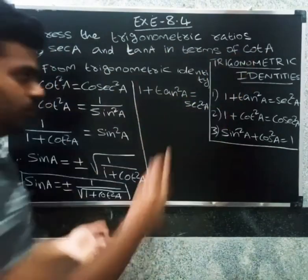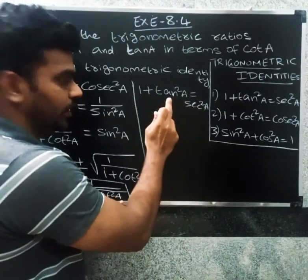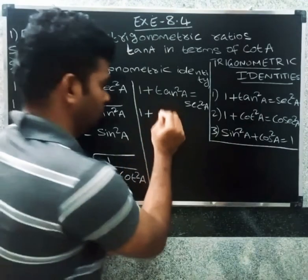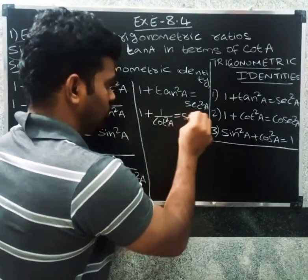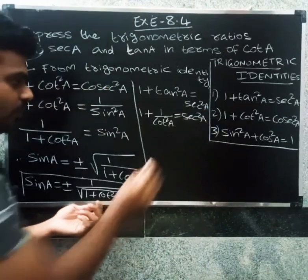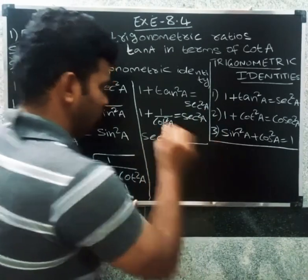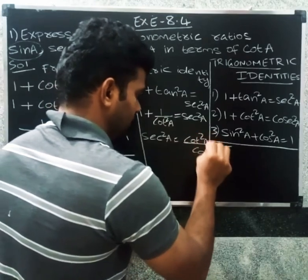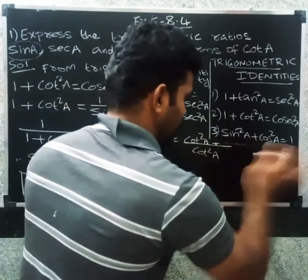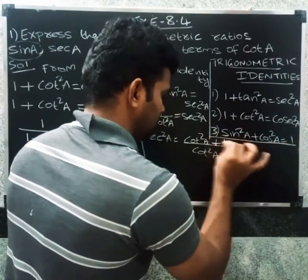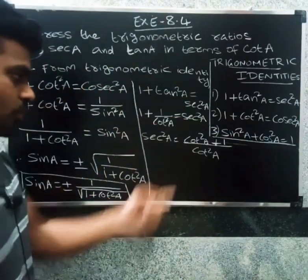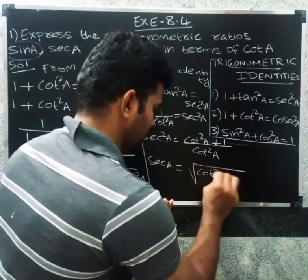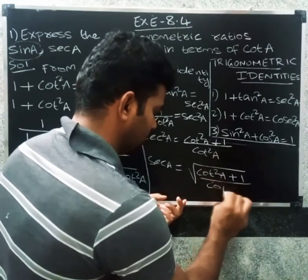Since tan is the inverse of cot, tan a equals one divided by cot a, so one by cot square a equals secant square a. Taking LCM with cot square a on top: cot square a plus one over cot square a equals secant square a. Therefore secant a equal to root of cot square a plus one divided by cot square a.